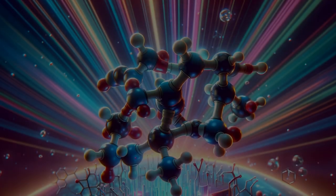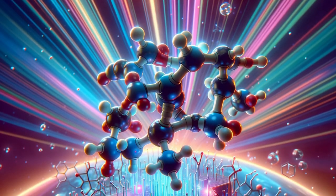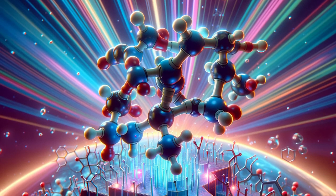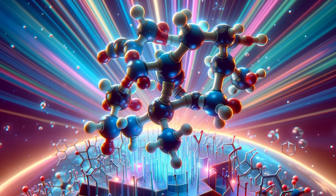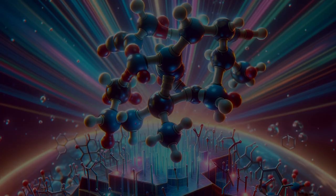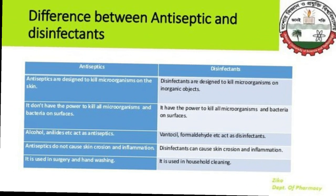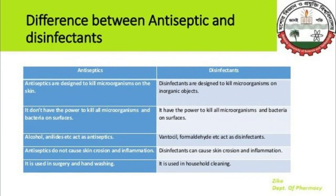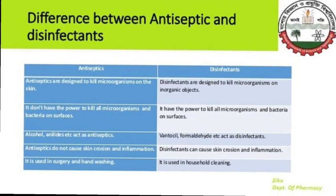But it's not just safety concerns that led to the downfall of mercurochrome. Advances in medicine have provided us with a plethora of alternatives that are both safer and more effective. Today we have options like hydrogen peroxide, iodine, and alcohol-based antiseptics, just to name a few.